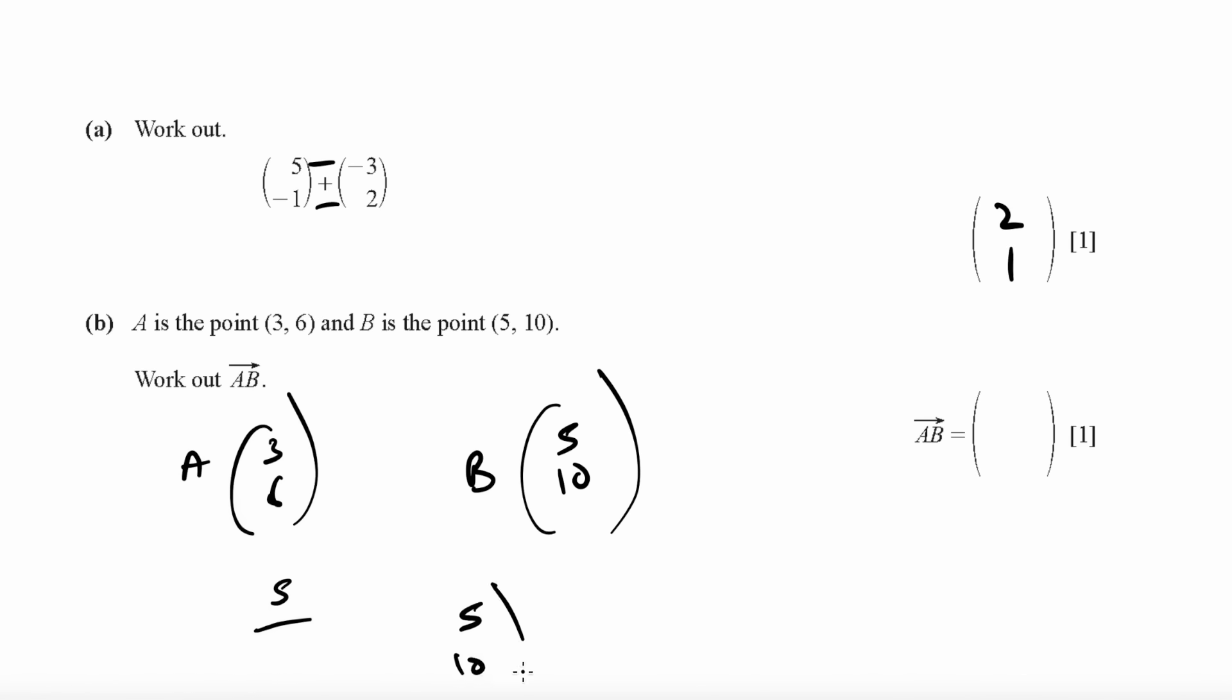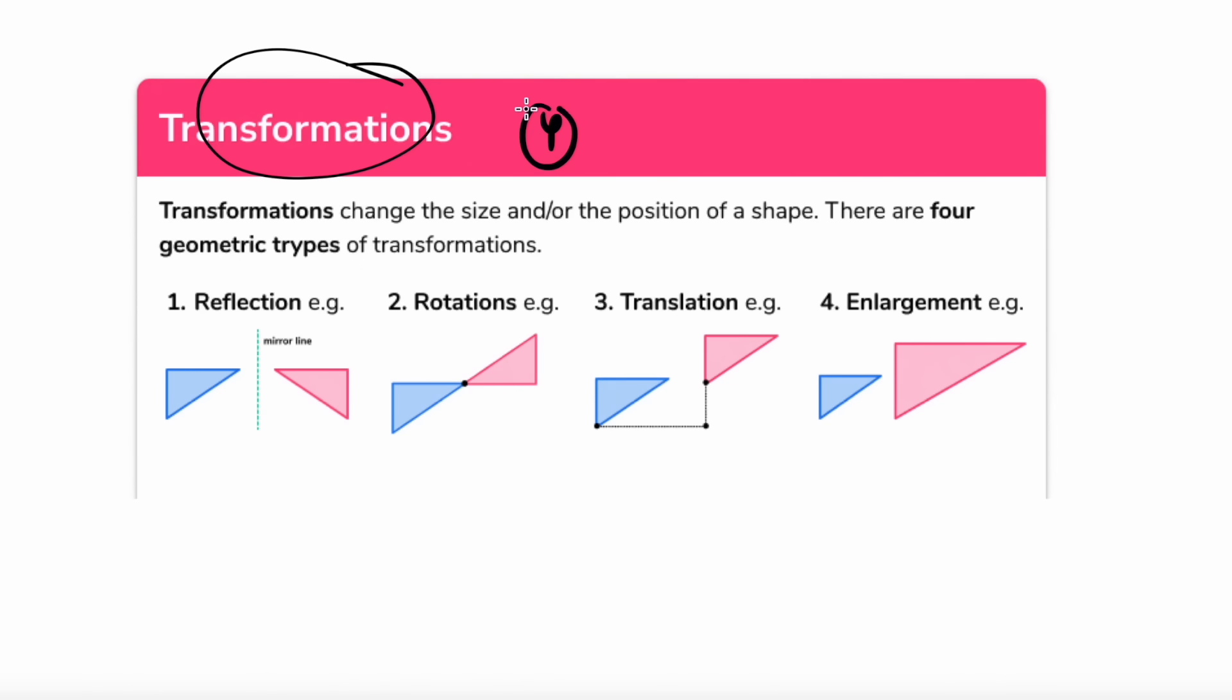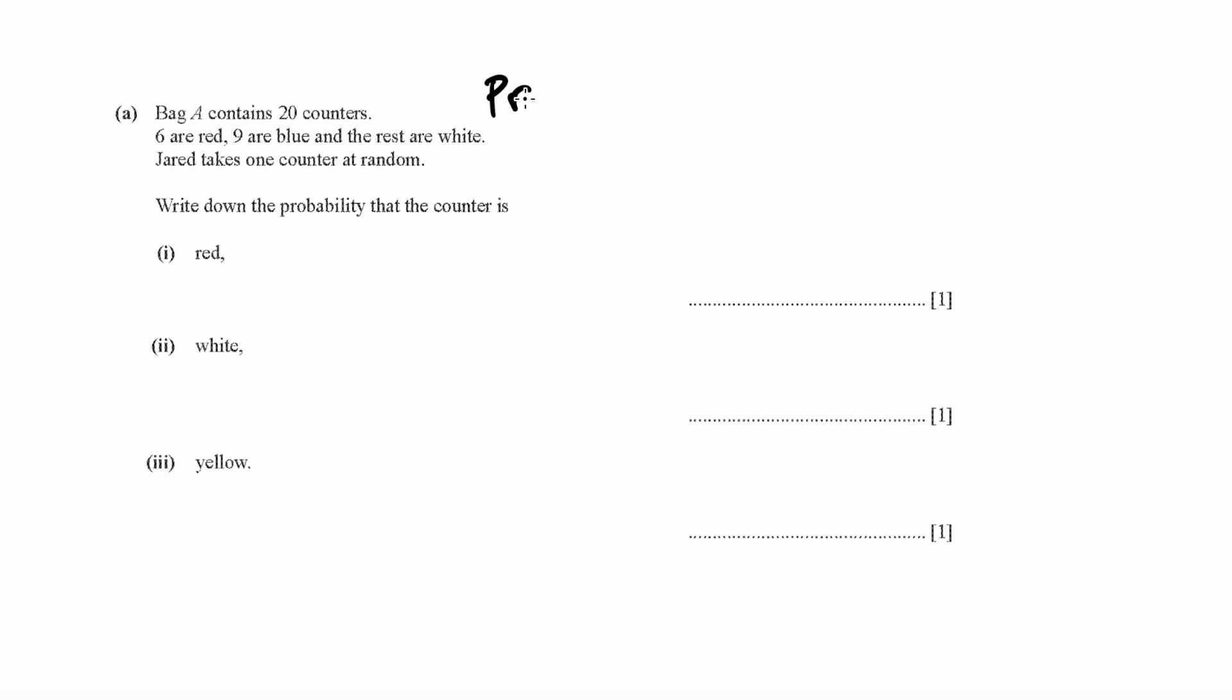Under transformations, we have to know four types of transformations which involve reflection, where you simply draw a mirror line and the two images. There's rotations which can be from 90 degrees, 180 degrees, to 270 degrees. We then have translations which are written in the form like this, where the top means going right or left, and the bottom going up or down. And then we have enlargement, which is simply using a scale factor to enlarge the shapes.